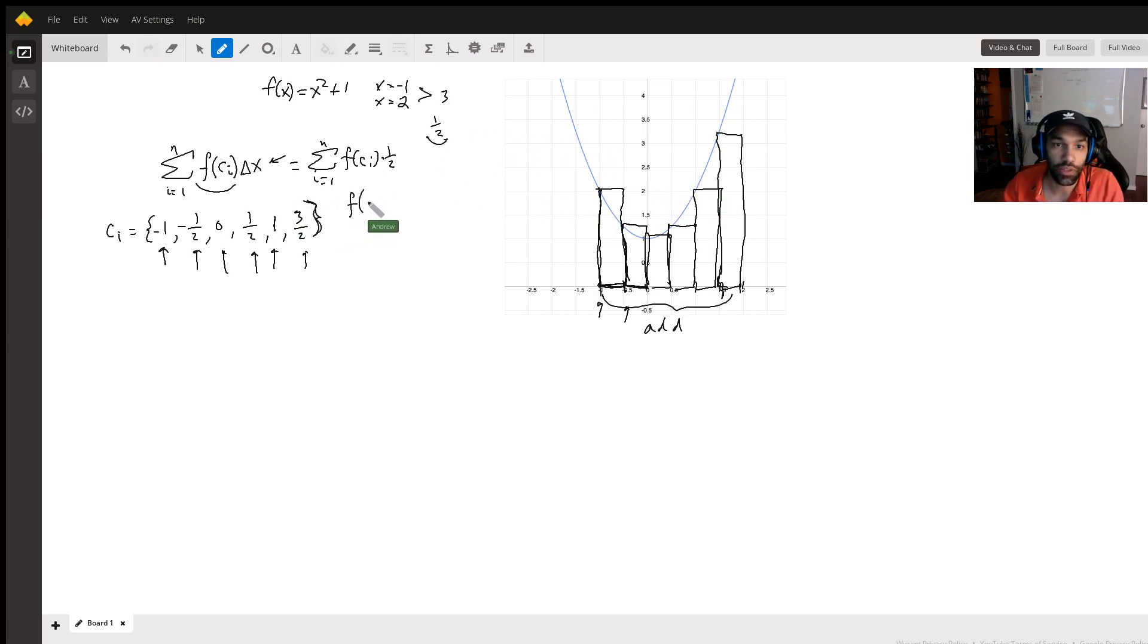So go one by one. Let's say c1, which is the first one here. When we plug that into our function up here, that's going to give us two. And then if we plug in negative one half into that function, it's going to give us five-fourths. And we keep going to the next one here, and that's going to give us one. And let's see, that's the third one. We're going to do the fourth one.